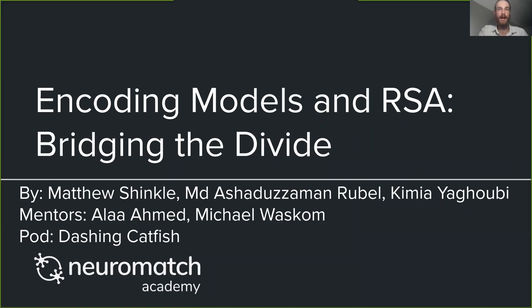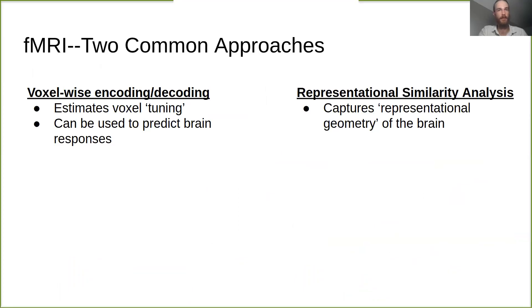Two common approaches to fMRI analysis are voxel-wise encoding models and representational similarity analysis. The results from these two approaches are often framed in different ways. For example, encoding models are often said to estimate voxel tuning to different features. In contrast, RSA is said to capture the representational geometry of the brain.